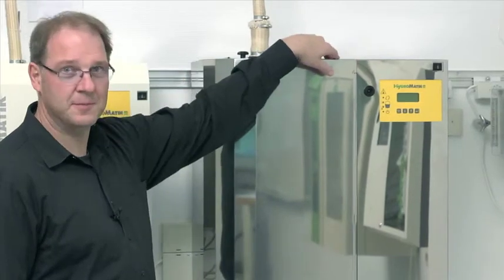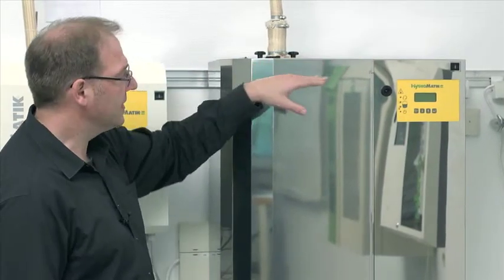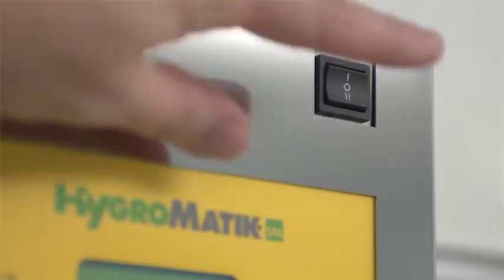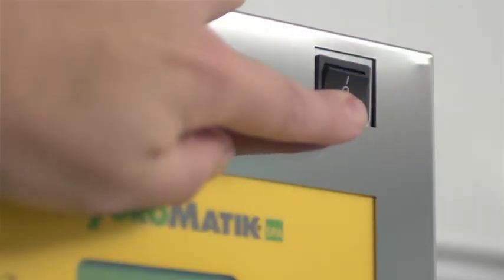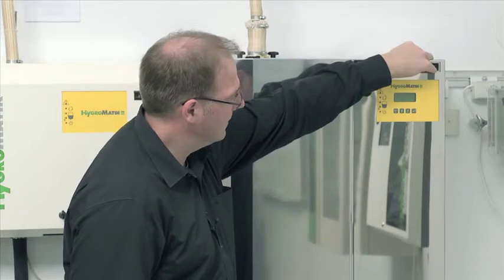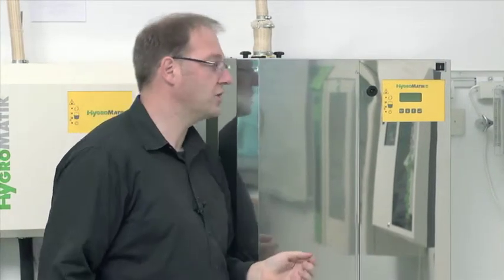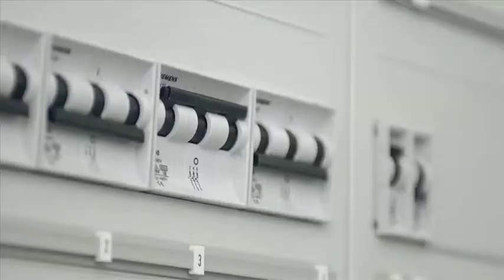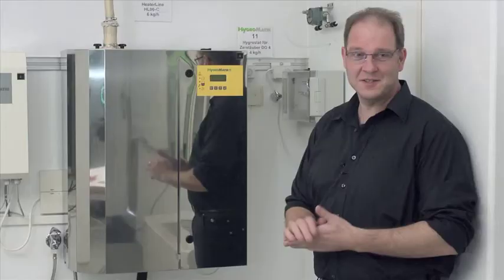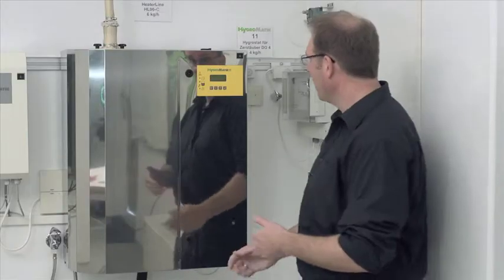Before I begin with the actual maintenance of the unit, I first need to make sure that the water is drained from the steam cylinder. To do so, I press and hold the control switch in position 2. After the water is drained, I disconnect the unit from the power supply and secure it against being restarted. You want to avoid being at the unit when all of a sudden the power could come back on.